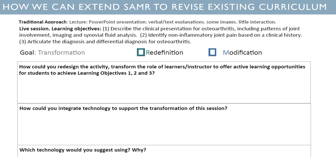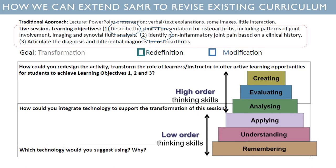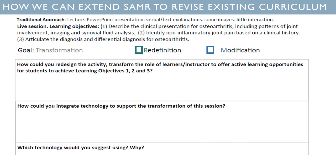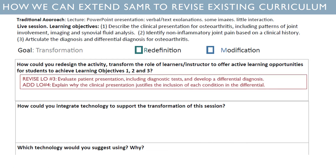These three objectives are from a real lecture from a few years ago that we transformed to a more active session. The first two objectives use lower order cognition verbs — describe and identify — and they're fine, because both of those represent knowledge that's foundational to students participating in something at a higher order level of thinking about this disease process concerning osteoarthritis. The third objective is something we need to review, because it is intended as a higher order thinking engagement, but the verb 'articulate' might not express that as well as we'd like to accurately reflect what I actually want students to know and be able to do.